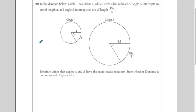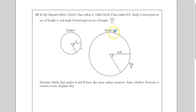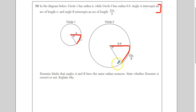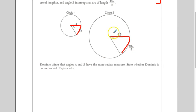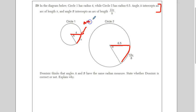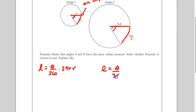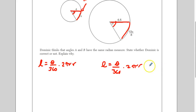Question 29. What the question is saying: the arc length of circle one is π, the arc length of circle two is 13π/8, the radius of circle one is 4, and the radius of circle two is 6.5. Dominic thinks that angles A and B have the same radian measures — state whether Dominic is correct. Since these are arc lengths, we need the arc length formula. All we have to do is find the angle of both circles using the arc length formula and see if they're the same.